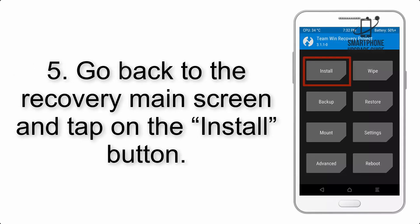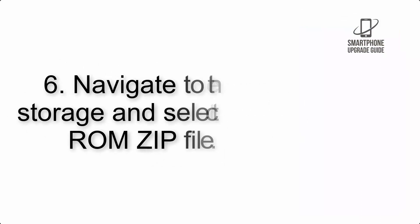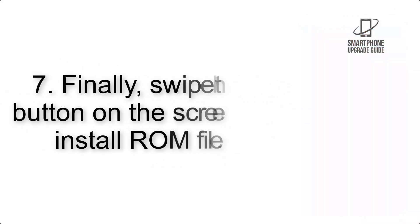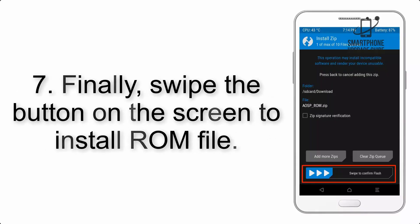Step 4: Swipe the button to wipe the device. Step 5: Go back to the recovery main screen and tap on the Install button. Step 6: Navigate to the storage and select the ROM zip file.